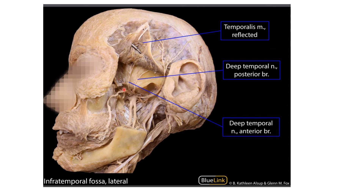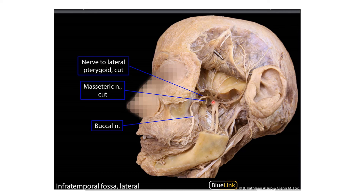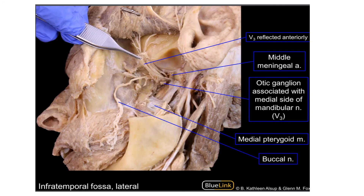From the anterior division we can see the deep temporal nerve branches, with the temporalis muscle reflected. There is also the masseteric nerve supplying the masseter muscle, the nerve to lateral pterygoid as smaller muscular branches, and the buccal nerve. The middle meningeal artery is also visible here. The otic ganglion is a small parasympathetic ganglion connected to the mandibular division of the trigeminal nerve, providing a relay station for secretomotor fibers to the parotid gland.